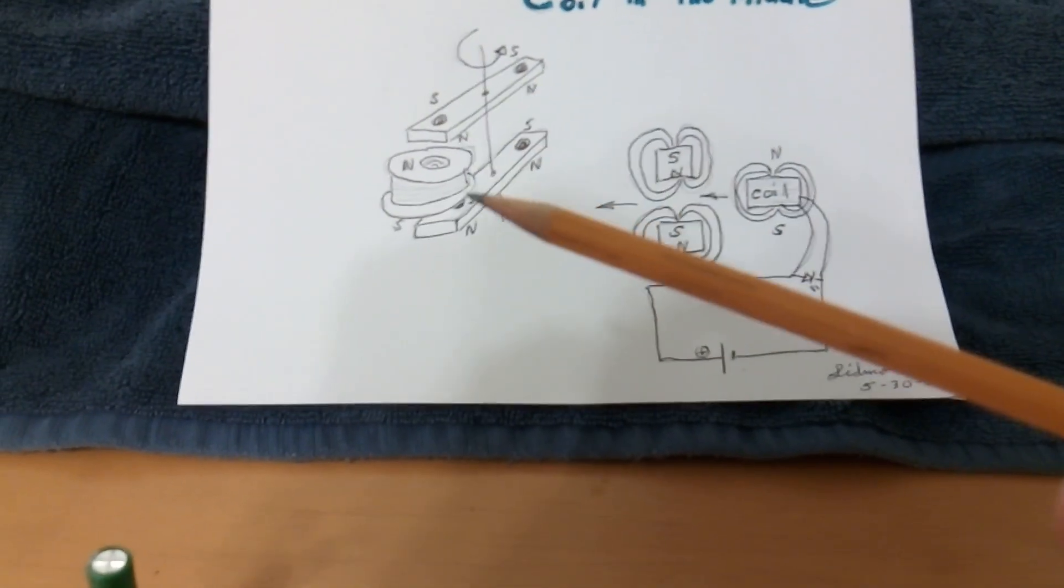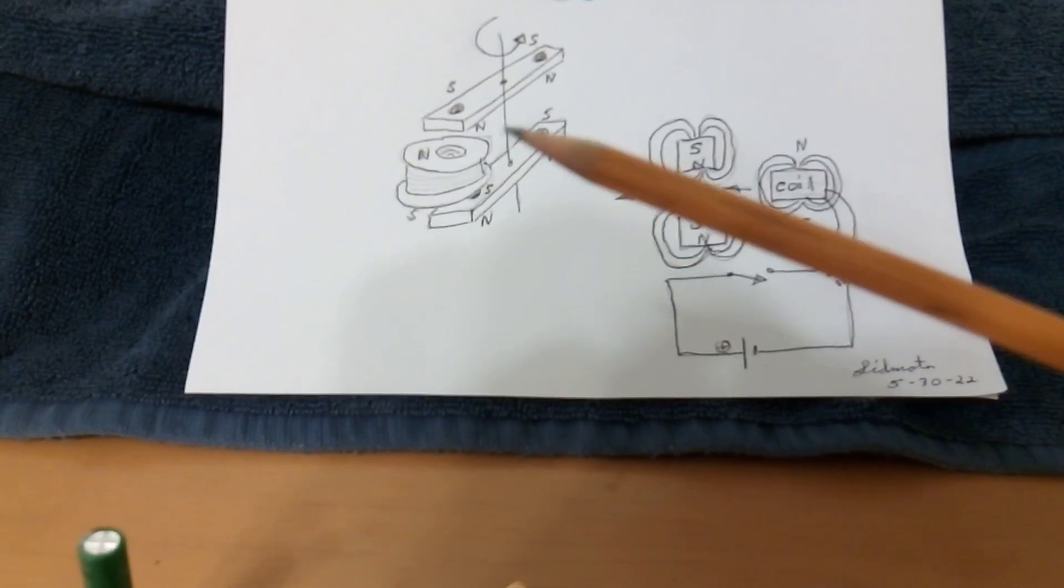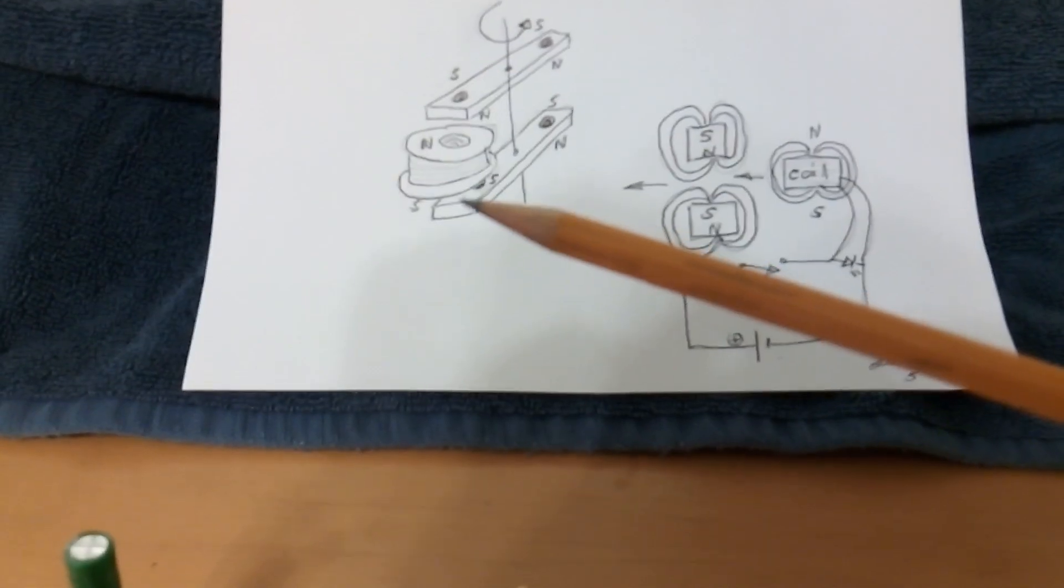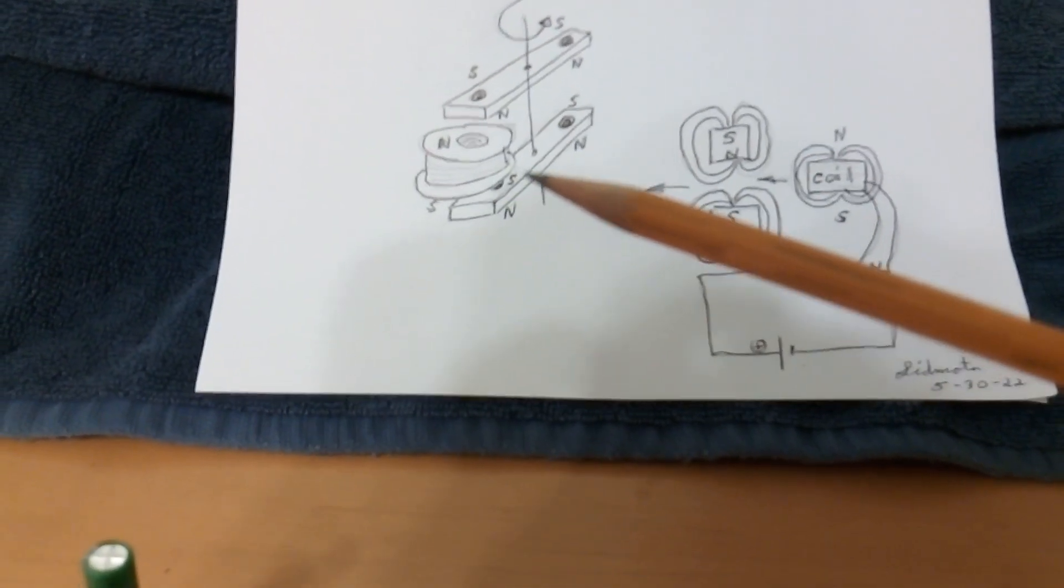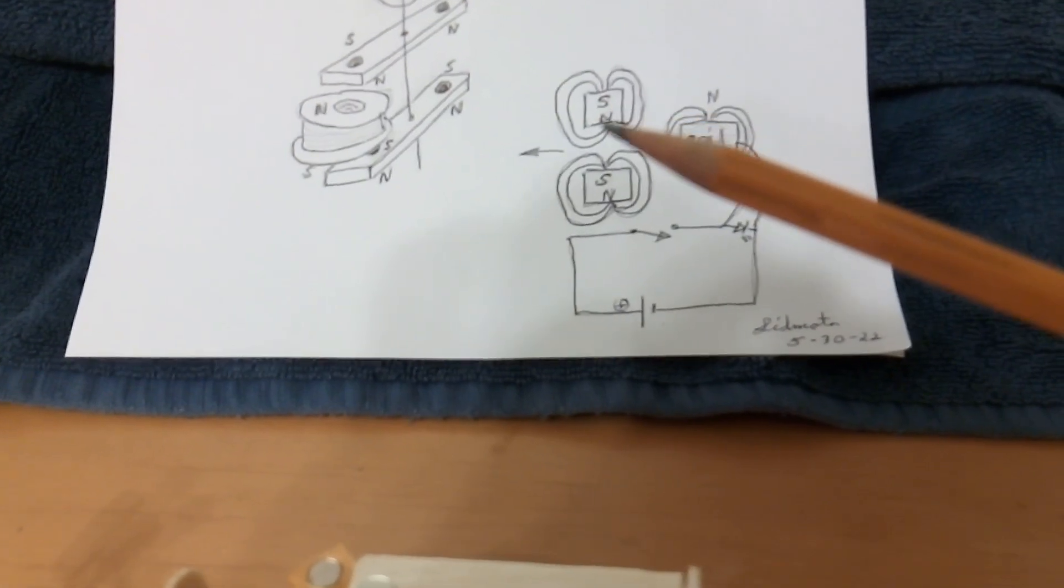This is the rotor. This is what's called the stator, which is the coil, the driving part of it. These are permanent magnets and they're in repulsion on both sides of the coil, and its attraction between the magnets.